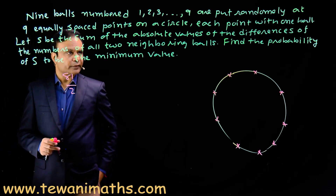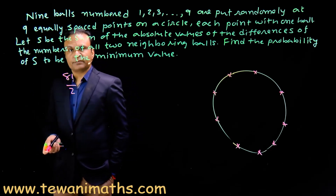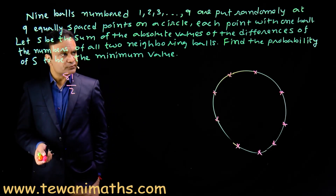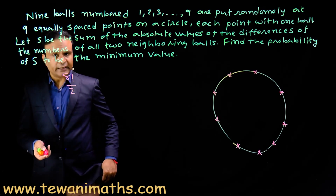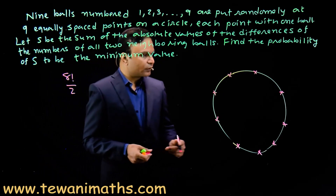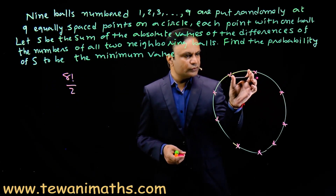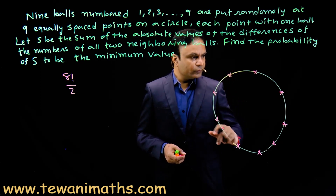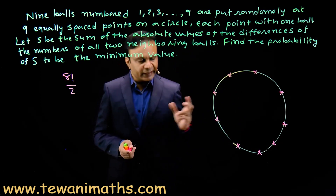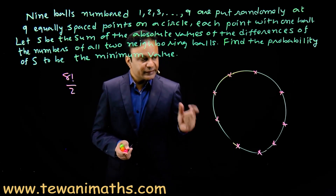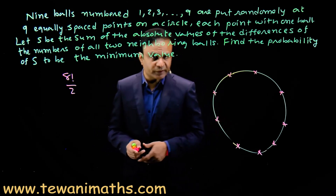We have to find the favorable cases in which sum S is minimum. S is the sum of absolute values of the differences of the numbers of all 2 neighboring balls — we calculate the difference of every pair of adjacent balls and add the absolute values. Now, suppose ball 1 and ball 9 are placed on the circle. There are 2 routes from 1 to 9. On one route suppose we have k balls x₁, x₂, ..., xₖ, where k may be 0, 1, 2, 3, 4, 5, 6, or 7.